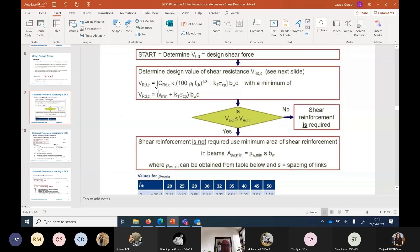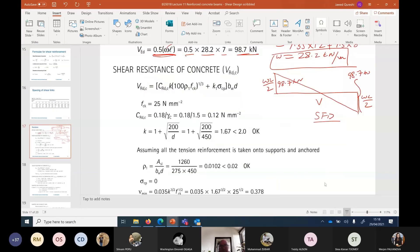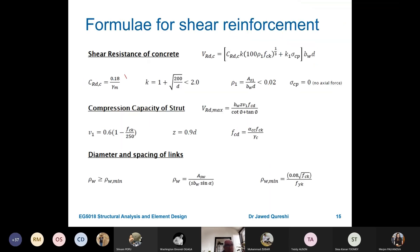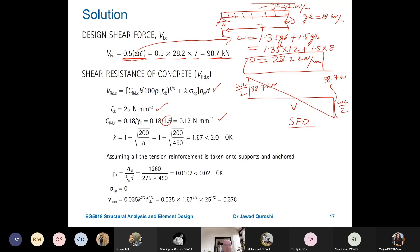So, it means that first, I have to check this VRDC. VRDC is this formula. CRDC, K, 100, Rho 1, FCK and other bits. And FCK here is 25N per mm2. CRDC, the formula is 0.18 over Gamma C. I am getting this formula from here. So, CRDC is this one. K is this formula. Gamma C is a factor and K is simply 1 plus 200 over D where D is the depth of the section. So, depth of the section is 450. And if we put all these values, it becomes 1.67. This should be less than 2. If it is not, then use 2.